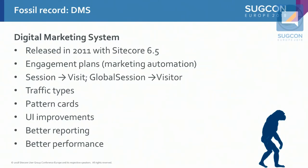In 2011, the Digital Marketing System was released — two years later. They introduced engagement plans. They renamed session to visit and global session to visitor. They introduced traffic types and pattern cards. You did have profiles in OMS, but on every page where you wanted to change the profile, you had to set the profile values manually. DMS introduced pattern cards where you can pre-set those values. There were some UI improvements and better reporting and performance — a good evolutionary step.